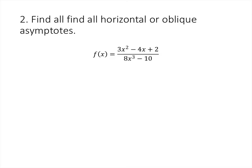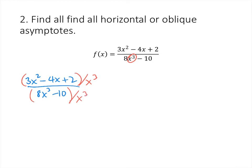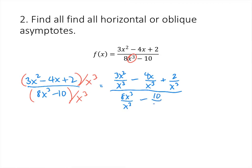Same type of problem — this one's a little bit more complicated, but again the first step is to look for the highest power of x in the bottom of the fraction and divide top and bottom by that highest power. So we have 3x squared minus 4x plus 2, all divided by 8x cubed minus 10, and we're going to divide top and bottom by x cubed.